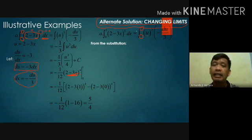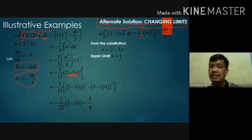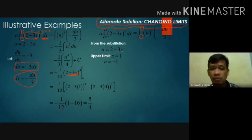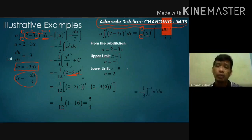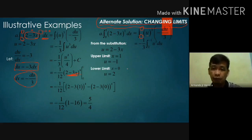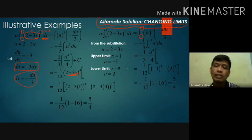For the upper limit x equals 1: u equals 2 minus 3(1) equals negative 1. For the lower limit x equals 0: u equals 2 minus 3(0) equals 2. So the integral becomes negative one-third times the integral from 2 to negative 1 of u cubed du, which gives negative 1 over 12 times [negative 1 to the 4th minus 2 to the 4th] equals 5 over 4, the same answer.